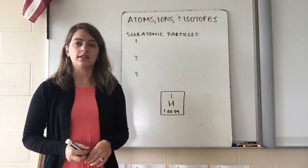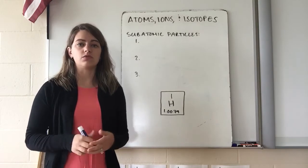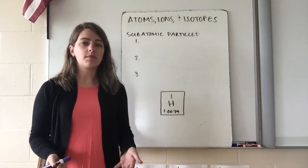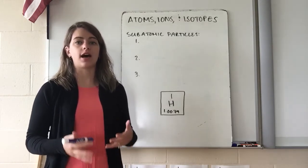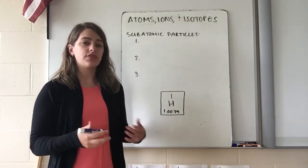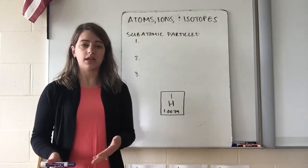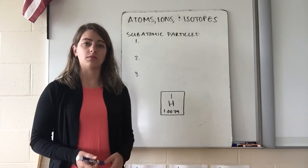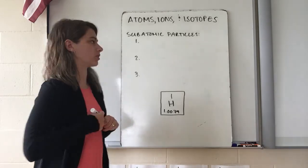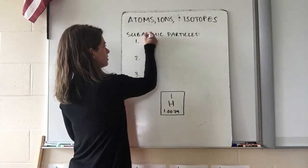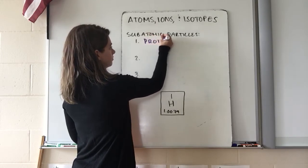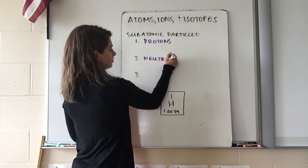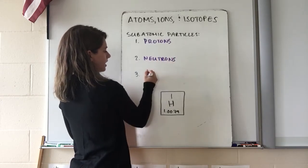In this video we are going to look at the similarities and differences between atoms, ions, and isotopes. Before we talk about what those terms mean, we need to talk about our subatomic particles. 'Sub' meaning smaller or below, we're thinking about the particles that make up our atoms. We have three subatomic particles: we have protons, we have neutrons, and we have electrons.